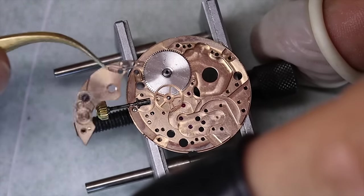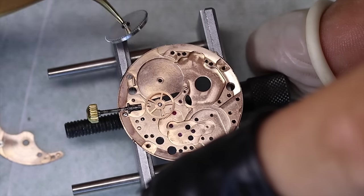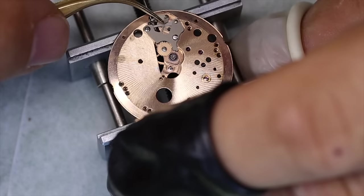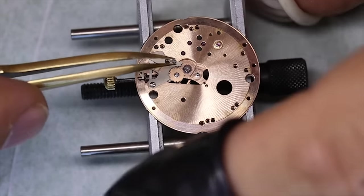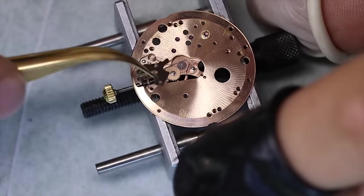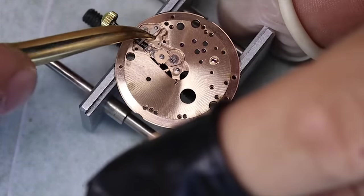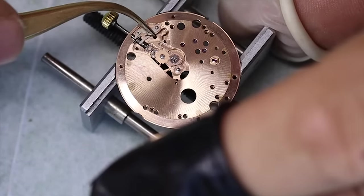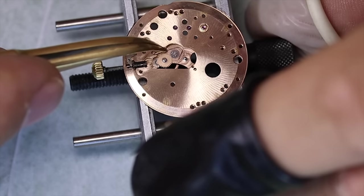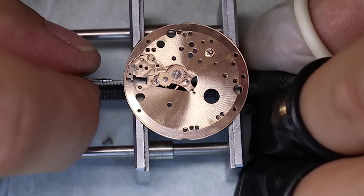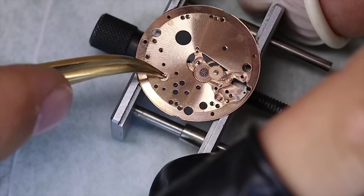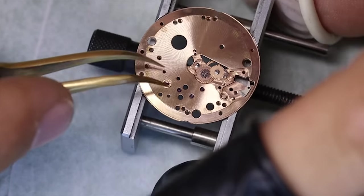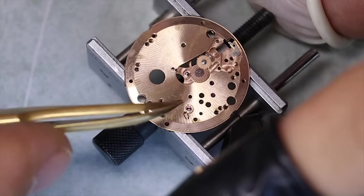It is not the thinnest movement Omega ever made. That honor goes to the caliber 700 which is not related to this one. That was a hand wound movement which can of course be much thinner. Only 1.76 millimeters. So that's not really a giant. Oh! Did you see that? There was the first troll. I'm telling you.